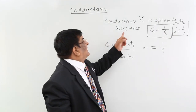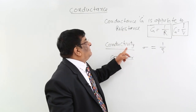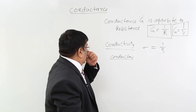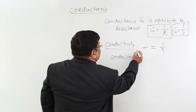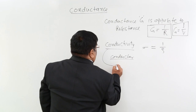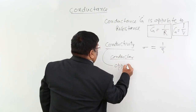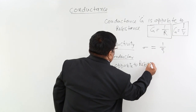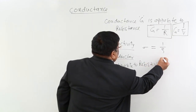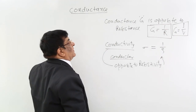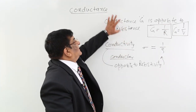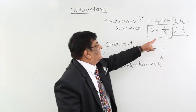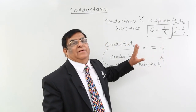The difference between conductance and conductivity is the same as the difference between resistance and resistivity. Conductivity is opposite to resistivity. So we have conductance, conductivity, resistance, and resistivity and their relations.